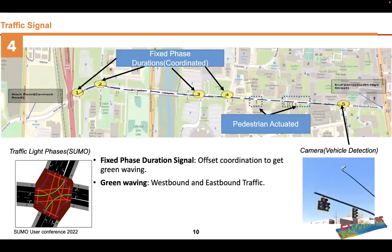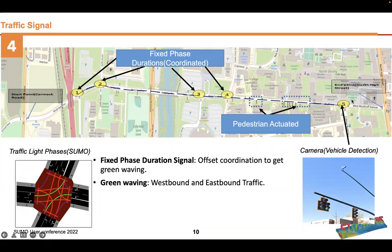The traffic signals we had were of two types. One was fixed phase, with coordinated durations, and the data was directly implemented into SUMO. There was an offset to get a green wave from west to east direction. The fifth signal was camera-based vehicle detection, and the same thing was implemented using event detectors in the SUMO simulation.